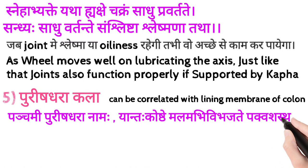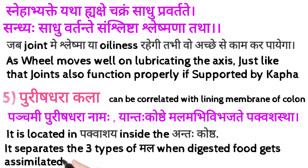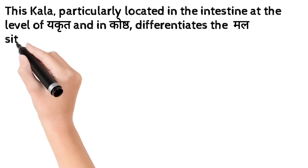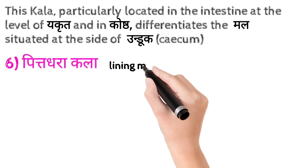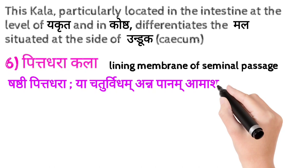Our fifth Kala is Purish Dharakala, which can be correlated with the lining membrane of the colon. Its shloka — 'Panchmi purish dharanam ya antekoshthe mal abhi vibhajate pakvashayas tha' — says it is located in Pakvashay inside the Antekosht. It separates the three types of mal when digested food gets assimilated in the large intestine, particularly at the level of Yakrit and in the Kosht, differentiating the mal situated at the side of Unduk, which is the cecum.